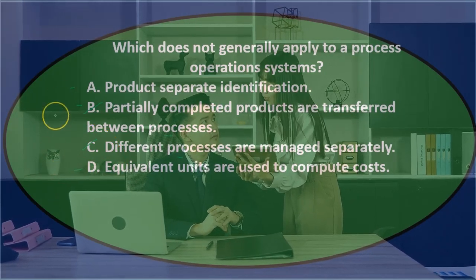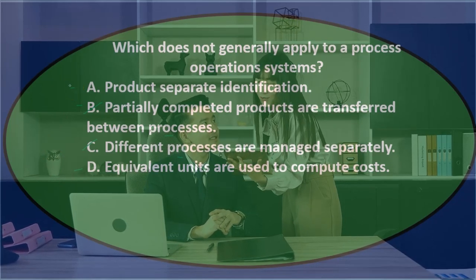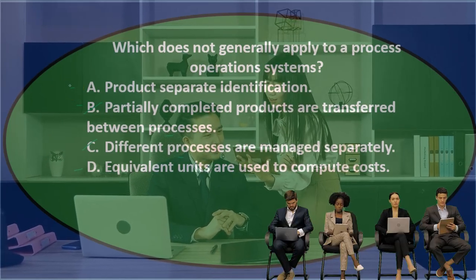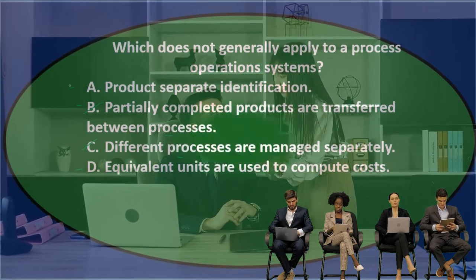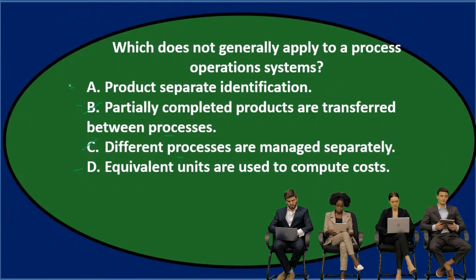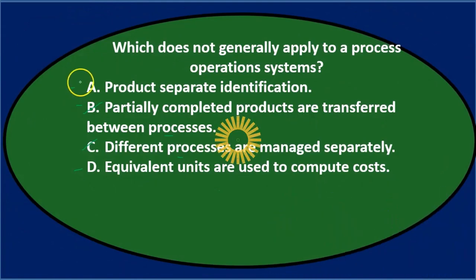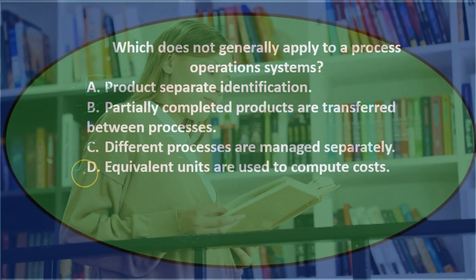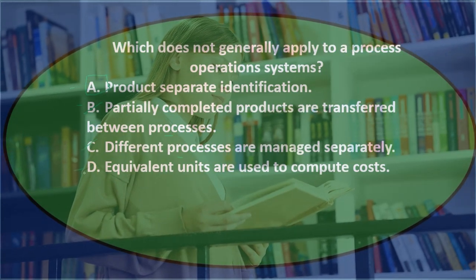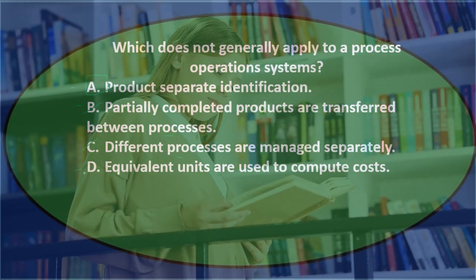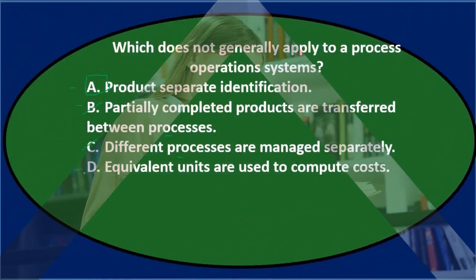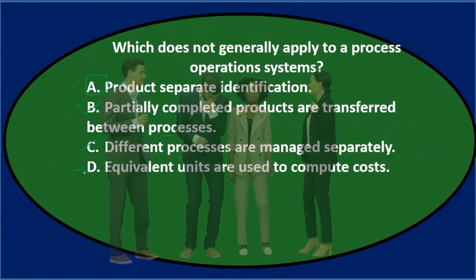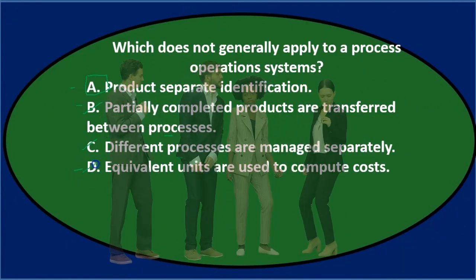Even if we're unsure about equivalent units, we'd go with A — product separate identification — because you'd think separate identification belongs to a job cost system, not a process cost system. In a process cost system, we don't separately identify individual units of inventory. Equivalent units, by contrast, are something we typically use specifically in a process cost system to help apply costs to the proper process. So the answer is A.